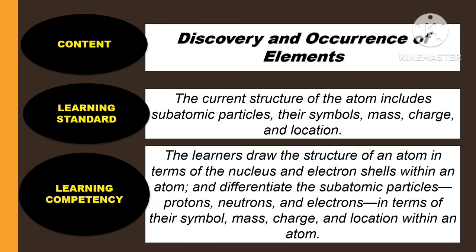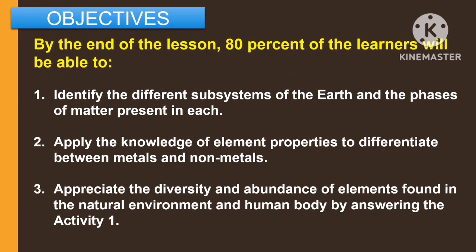This lesson is under the Matatag Curriculum. For the objectives, by the end of the lesson, 80% of the learners will be able to: first, identify the different subsystems of the earth and the phases of matter present in each; second, apply the knowledge of element properties to differentiate between metals and non-metals; and third, appreciate the diversity and abundance of elements found in the natural environment and human body by answering activity number 1.